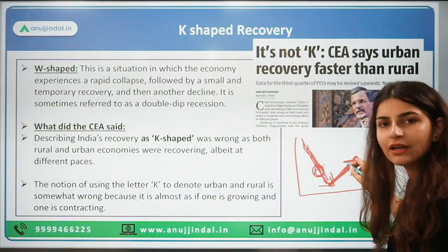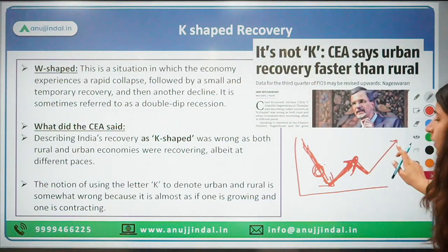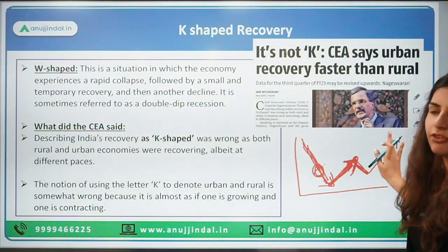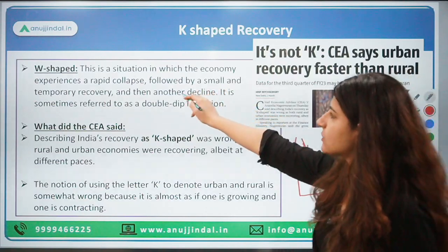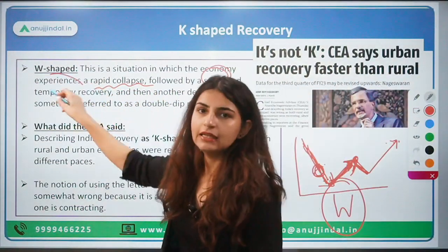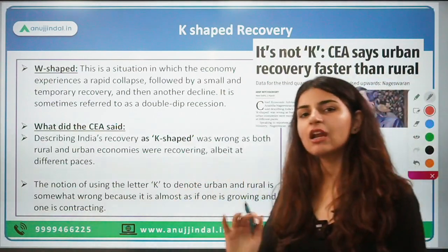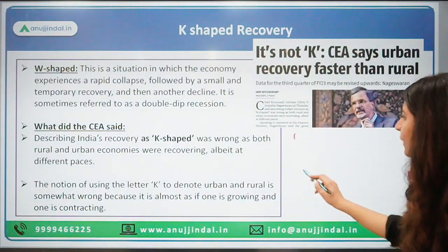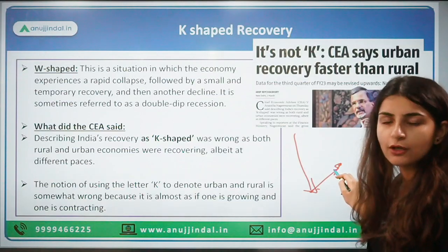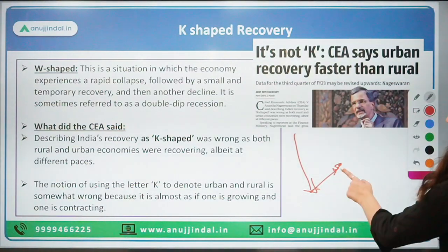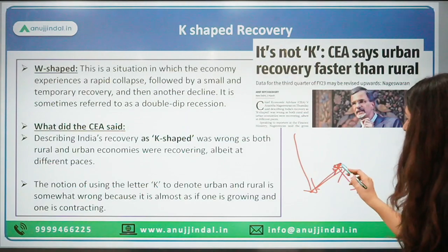After the temporary recovery, the economy sees another fall, and finally it grows — this shape forms a W. In a W-shaped situation, the economy experiences a rapid collapse followed by a small and temporary recovery, then another decline. This is very common in many economies. Even after COVID-19, in 2019-20 there was negative growth, but 9 percent growth was expected after the COVID period in 2021-22, which then came down to around 7 percent.